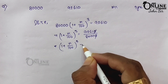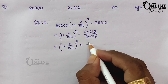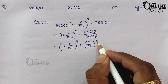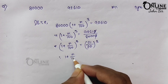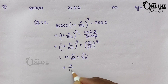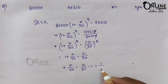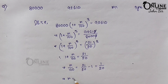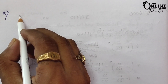So (1 + r/100)³ = (21/20)³. By comparing both sides: 1 + r/100 = 21/20, so r/100 = 21/20 − 1 = 1/20. Therefore r = (1/20) × 100 = 5 percent as your answer.